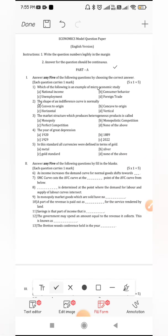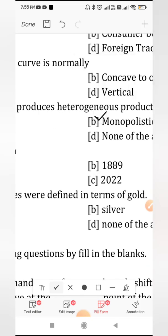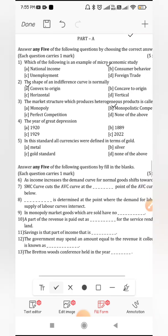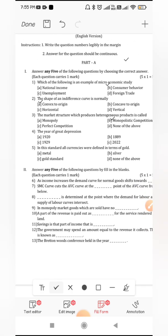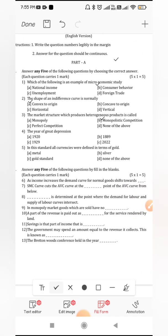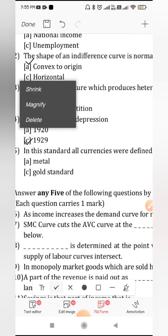Next is the market structure which produces heterogeneous is monopolistic competition. Homogeneous is perfect competition and which produces heterogeneous product is monopolistic competition. The year of great depression is 1929.